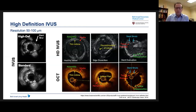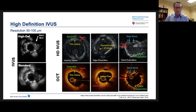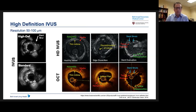In an attempt to compete with OCT, IVUS has developed better resolution systems using higher-frequency 60 MHz transducers, with a tradeoff of slightly decreased field depth. Stent visibility is improved with high-definition IVUS compared to standard IVUS, and we're better at identifying dissections and possibly thrombus. However, compared to OCT — which has much better resolution — things like intimal flaps from dissections are much easier to see with OCT, as well as more subtle aspects like malaposition, where stent struts aren't fully apposed to the vessel wall, or tissue prolapse between struts.